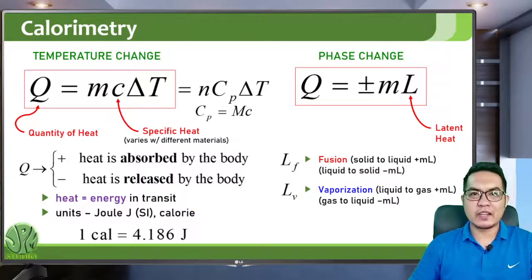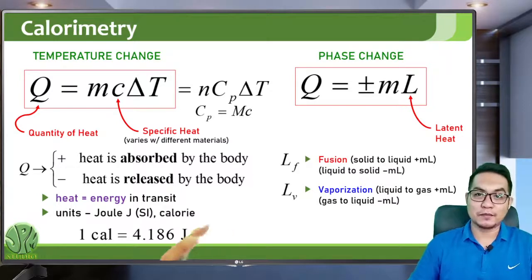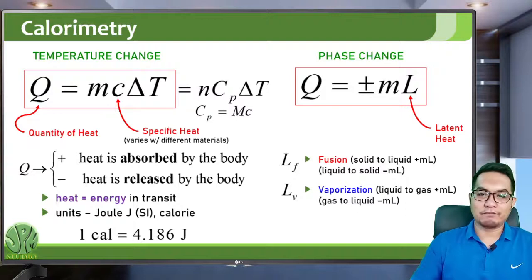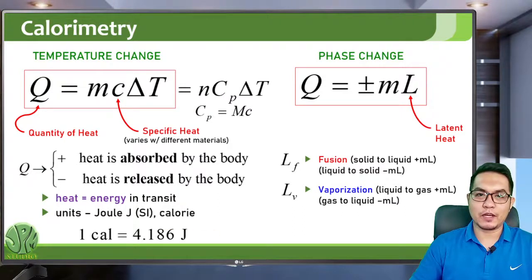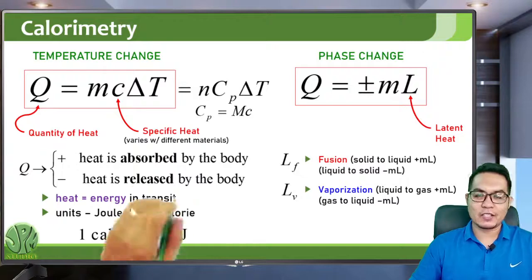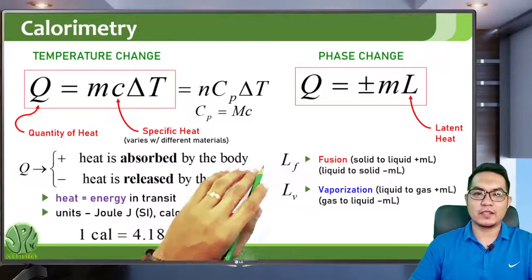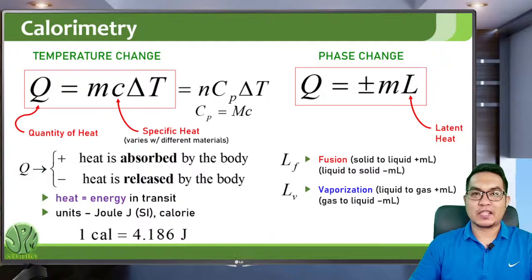There are still other types of transformation — not just solid to liquid and liquid to gas. There's also sublimation, which is solid to gas. There are different types of latent heats, but we'll focus on fusion (solid-liquid) and vaporization (liquid-gas).